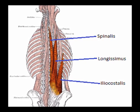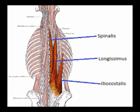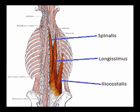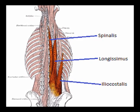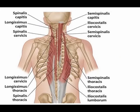As these muscles ascend the vertebral column, they divide regionally depending on where the muscles attach superiorly.